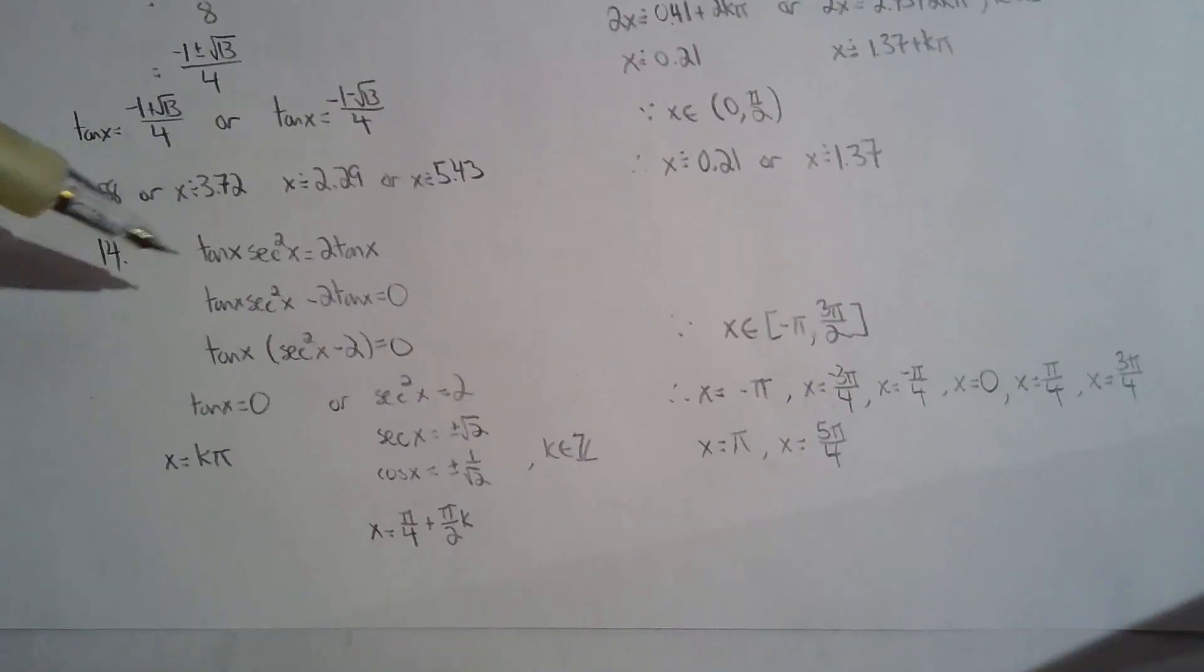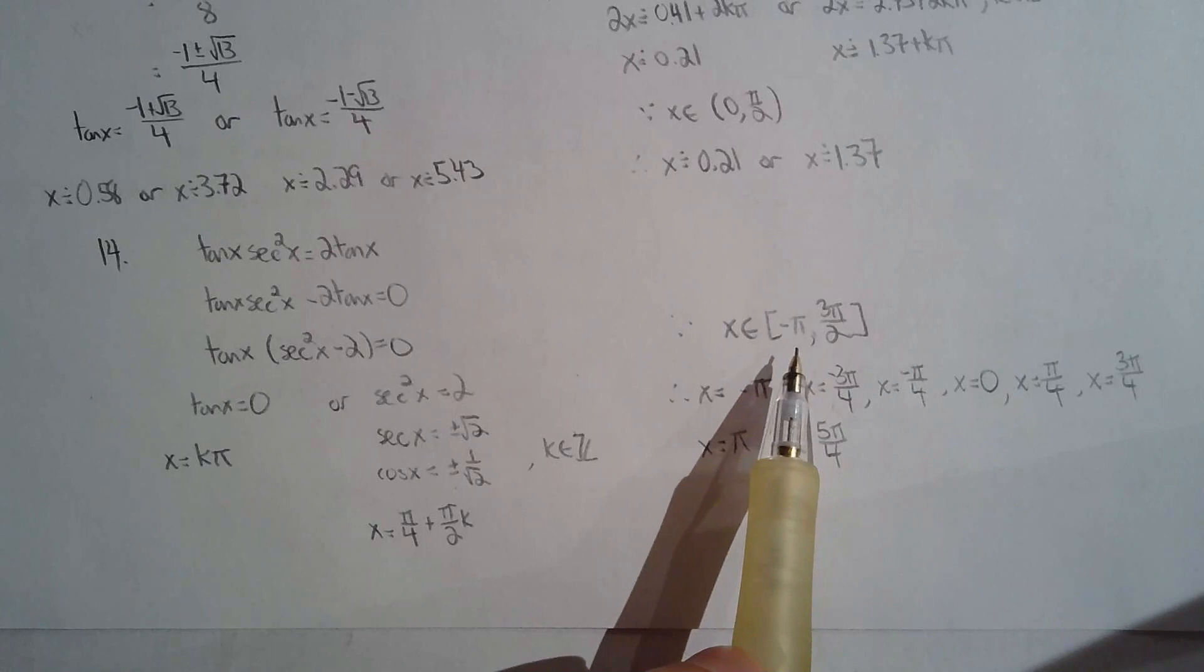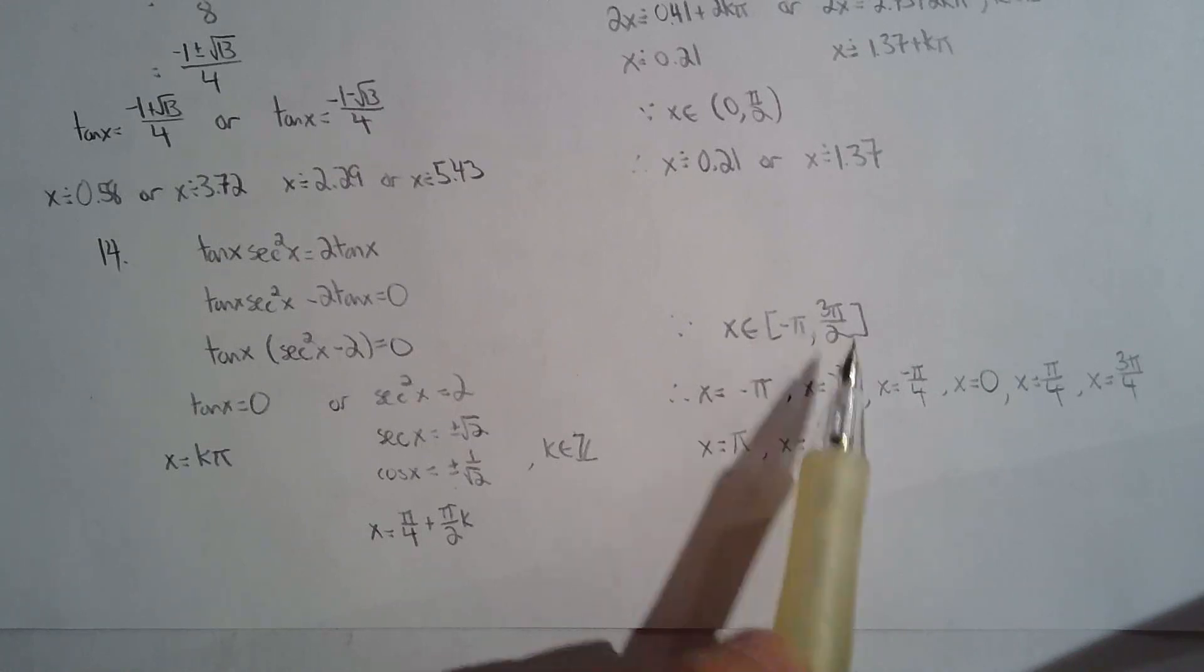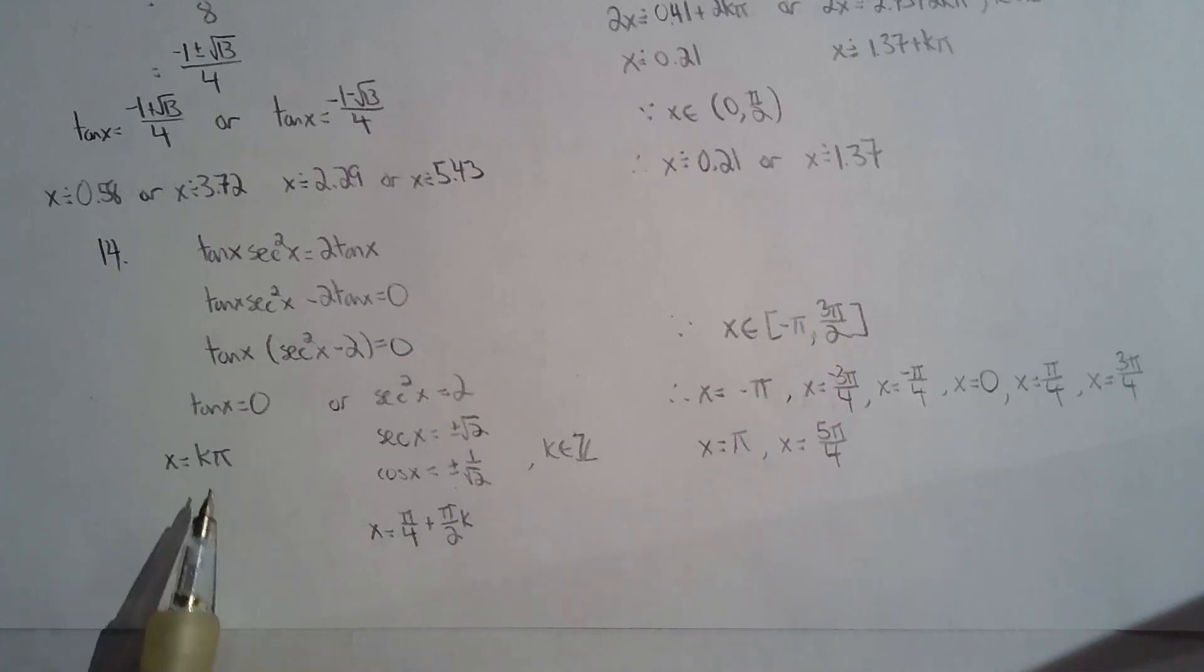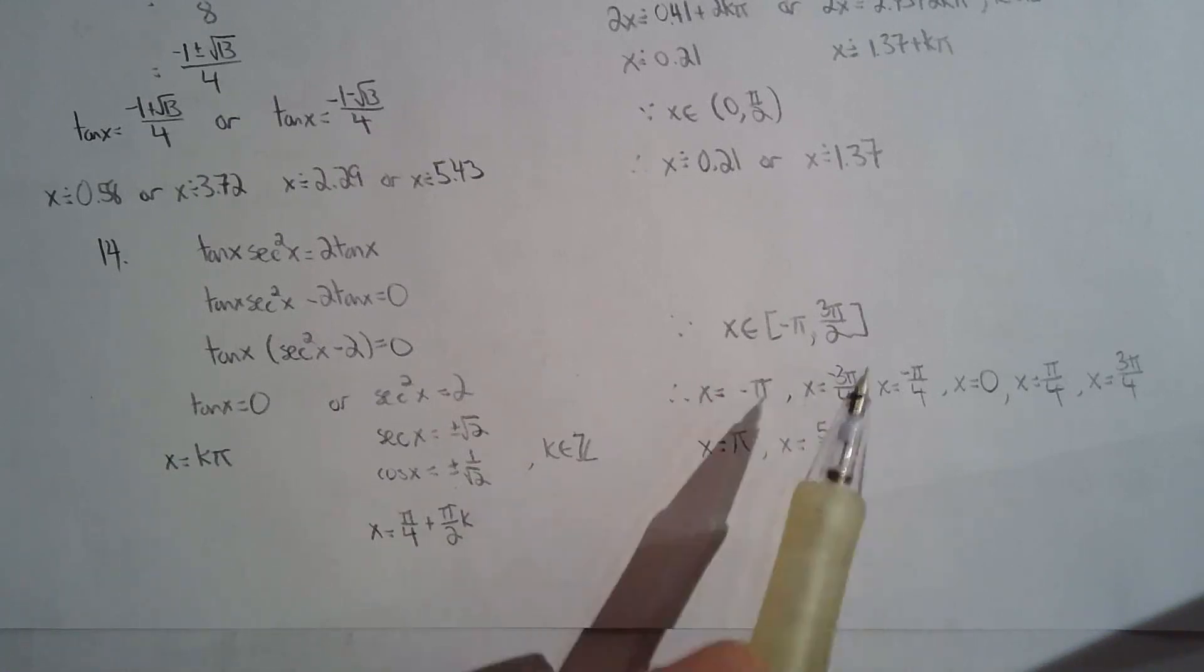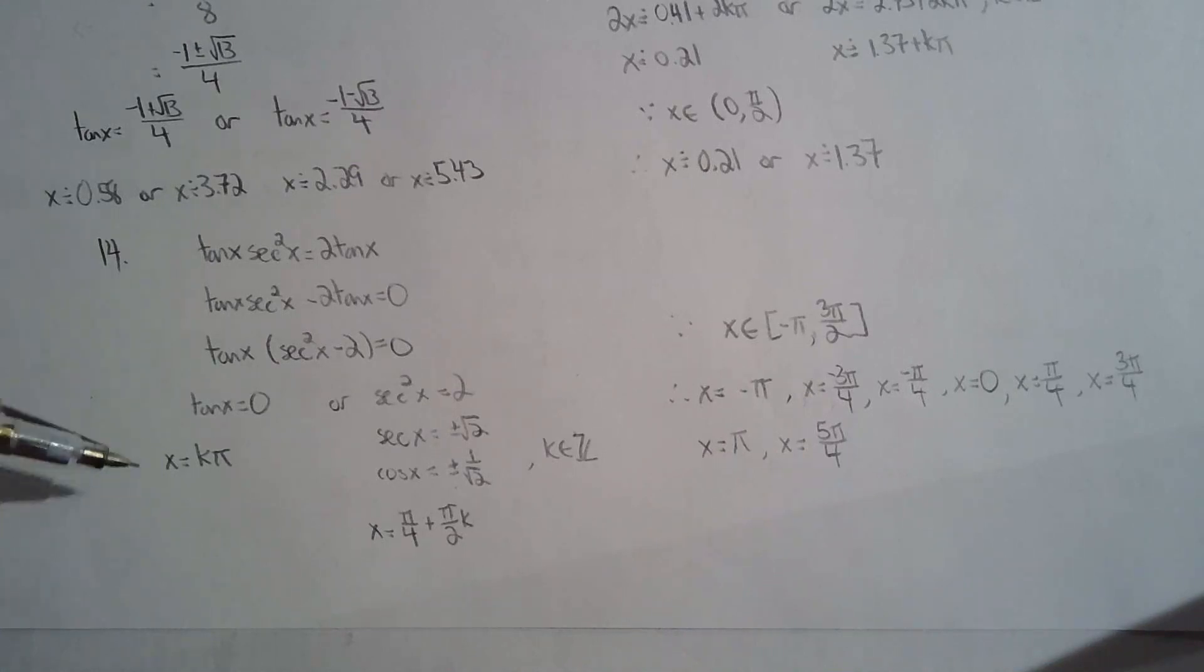For 14, set equal to zero, common factor tan x. Why did I do the k pi? Because the restriction on x was from negative pi to three pi over two—it wasn't the usual zero to 2pi. That's when I had to gather all the infinite solutions and then figure out which ones fall within the restricted domain. It's always a good idea to gather all the solutions and then reject the ones that don't fall in the restriction. It's much easier.